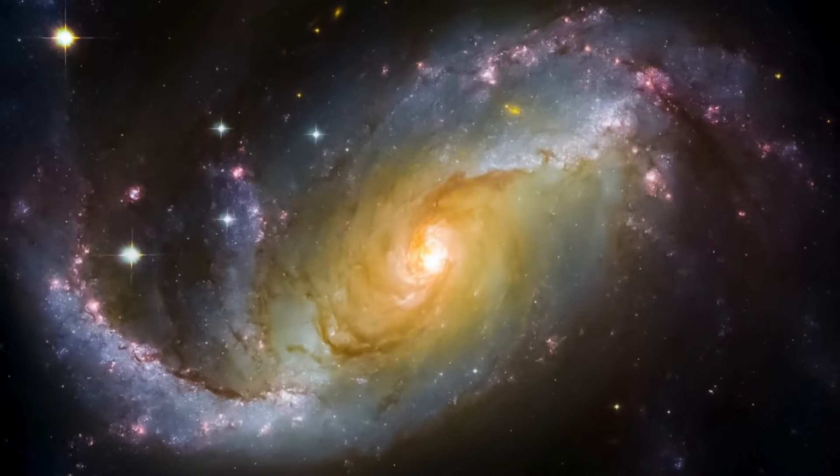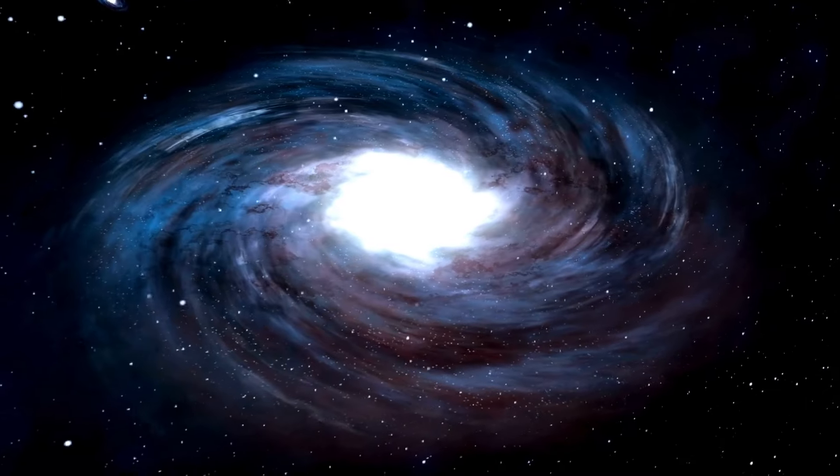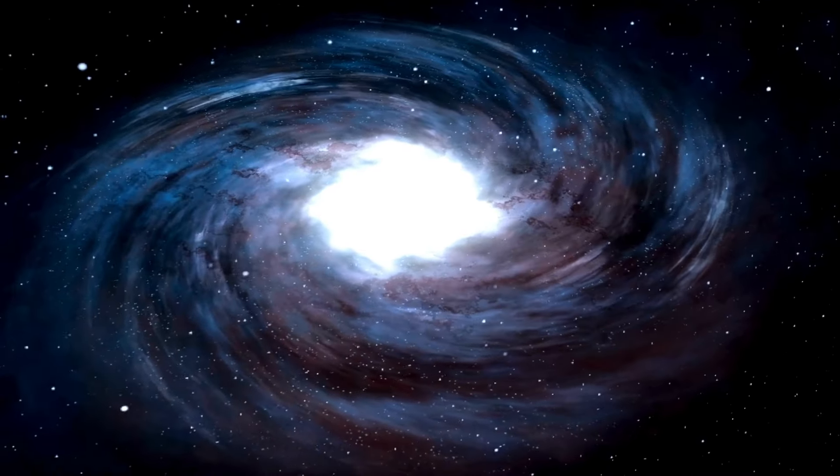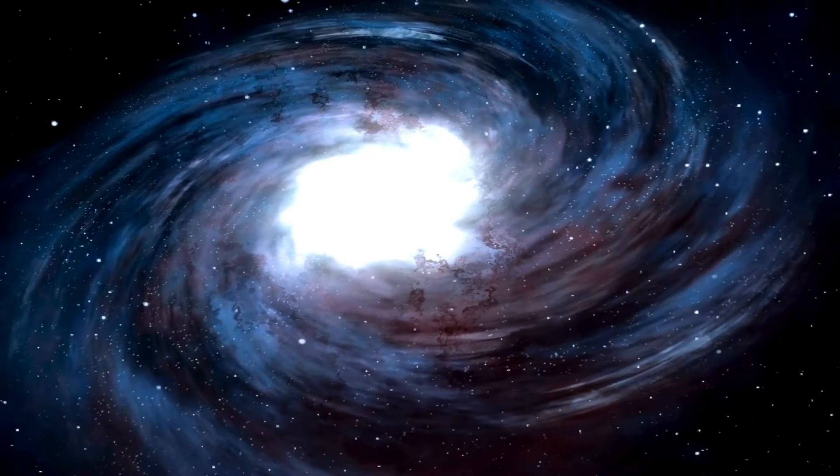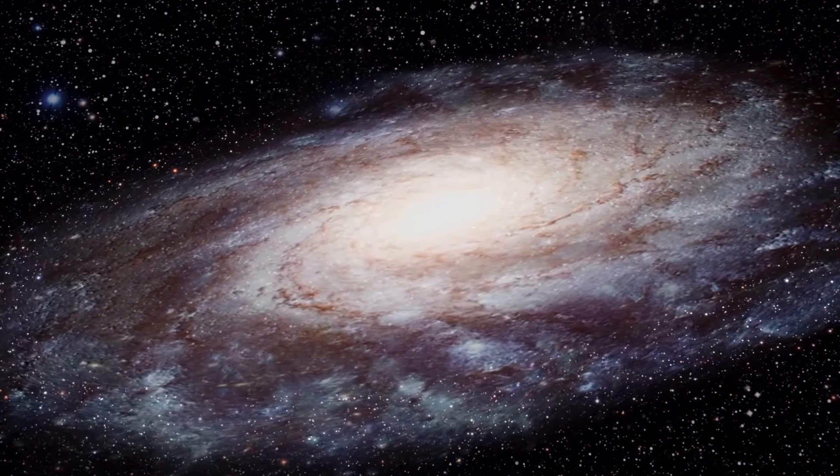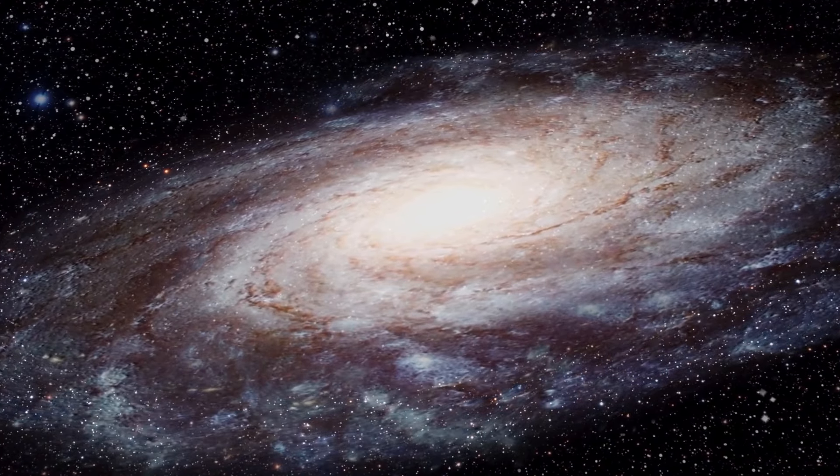Supernovae release an immense amount of energy and radiation, and some scientists believe these powerful forces may interact with dark matter in ways that we can observe and study. One intriguing theory is that dark matter exists in the form of weakly interacting massive particles, or WIMPs. If WIMPs exist, their interaction with the energy generated by Betelgeuse's supernova could provide clues to their nature. Such a discovery would be groundbreaking, offering the first direct evidence of dark matter, an elusive phenomenon that has baffled scientists for years.